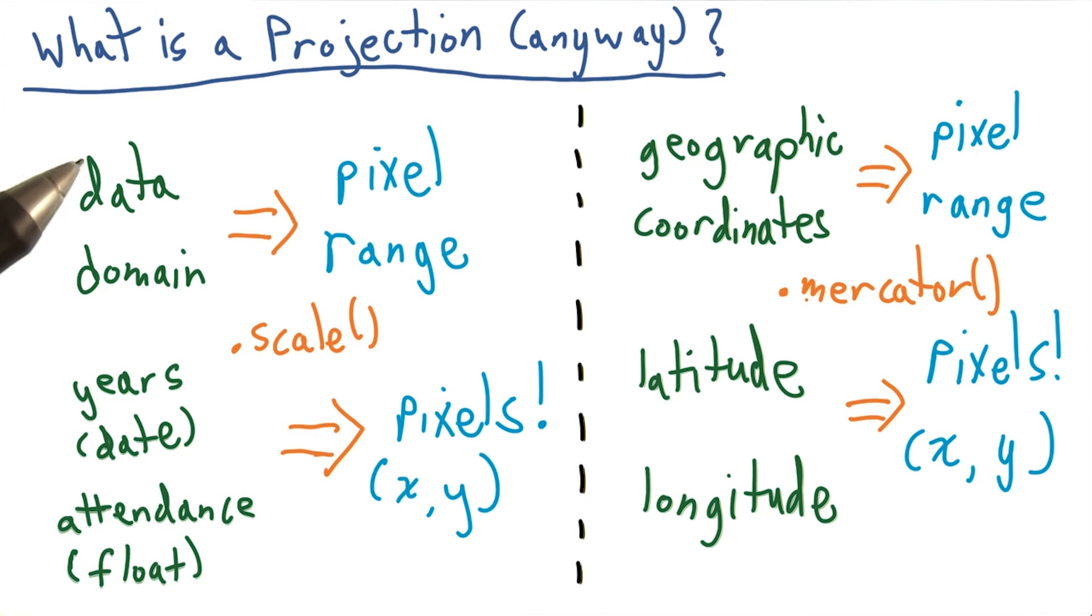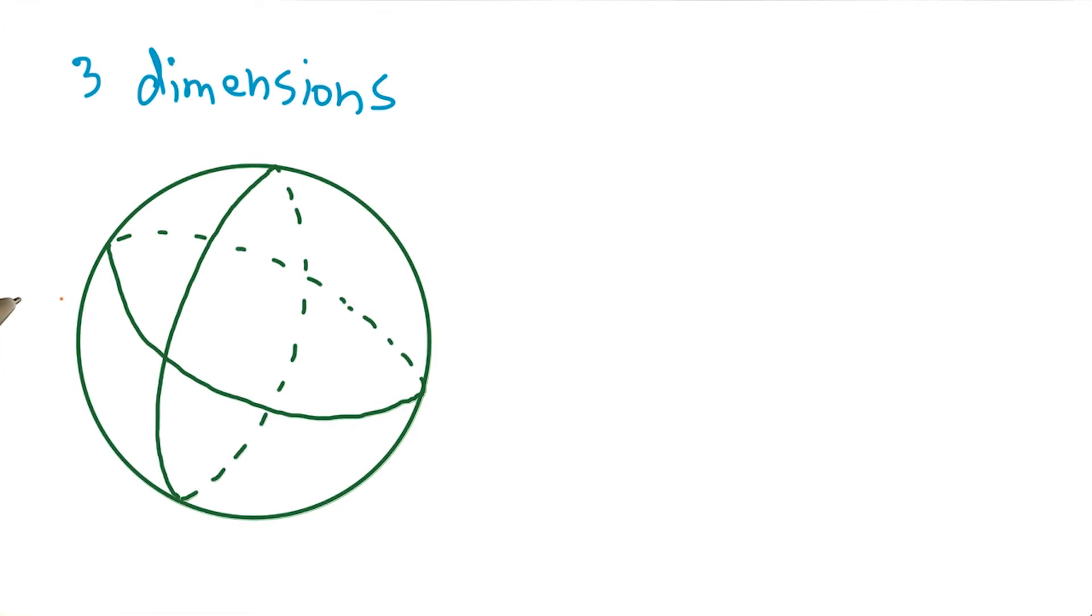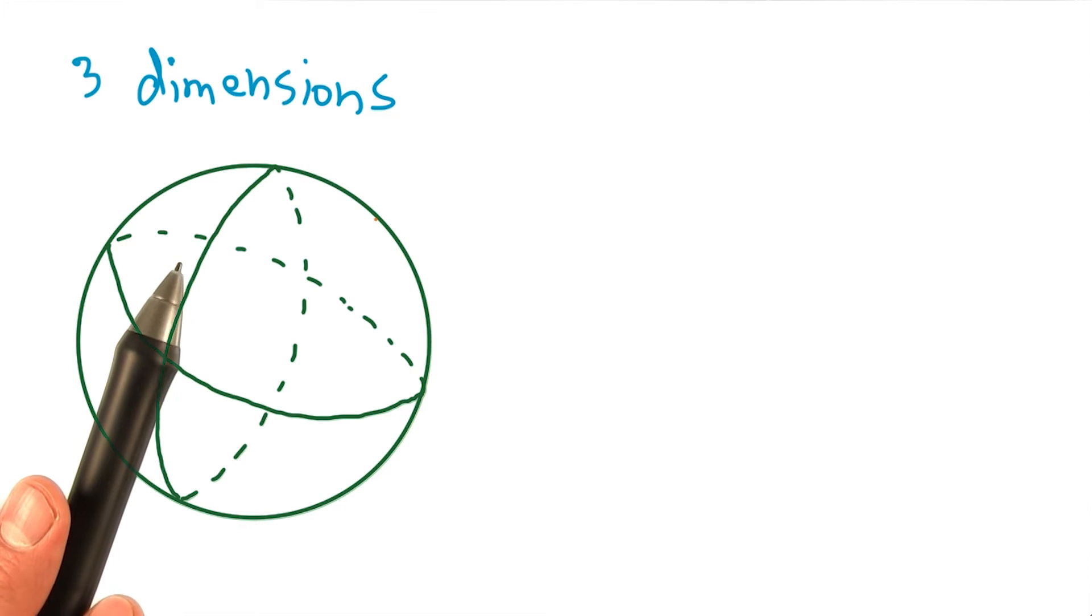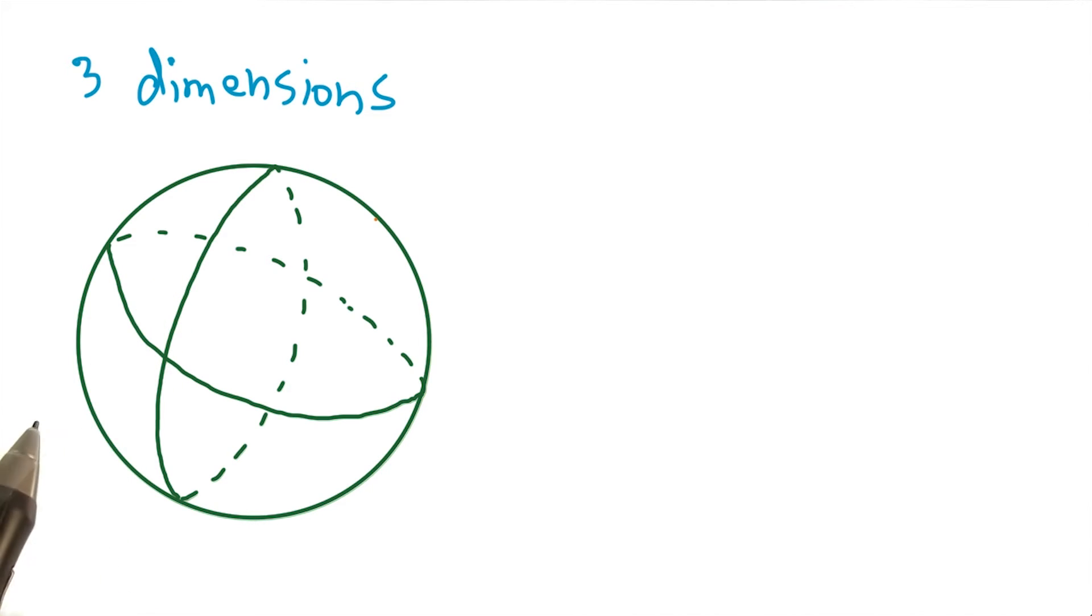But let's take a second now and really understand what a projection is. Coordinate data that represents points on a sphere, or in our case, the globe, actually encodes information in three dimensions. And since the Earth is a three-dimensional object, or a sphere, there is no perfect way to display it on a two-dimensional surface, such as a computer screen or a piece of paper.